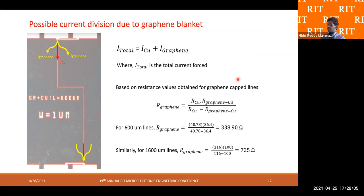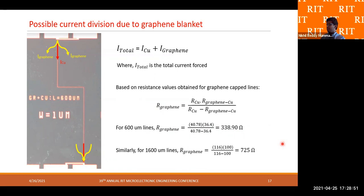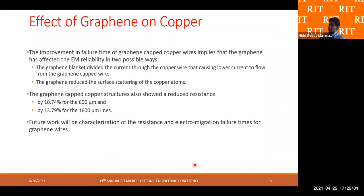Since the graphene was transferred as a blanket and not etched, there is a possibility that the total current forced through the wire was divided between the graphene-capped copper wire and the graphene blanket spread across the wafer. Based on the resistance values obtained for the graphene-capped counterparts, we attempted to calculate the resistance of the graphene. For the 600-micron lines, the calculated resistance of the graphene sheet was approximately 338.9 ohms, and for the 1600-micron lines, the graphene resistance was about 725 ohms.